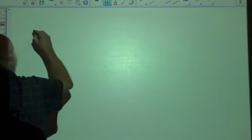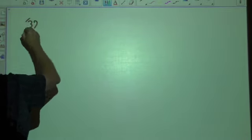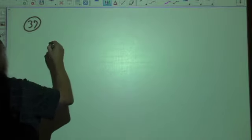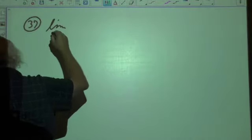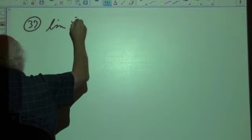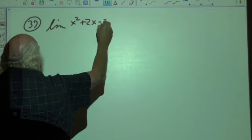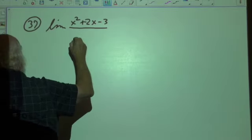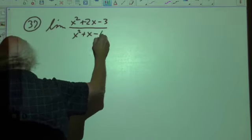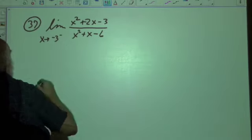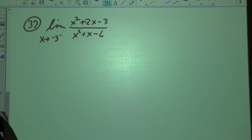Number 37. For this one we got the limit of x squared plus 2x minus 3 over x squared plus x minus 6, as x approaches negative 3 from the negative direction.